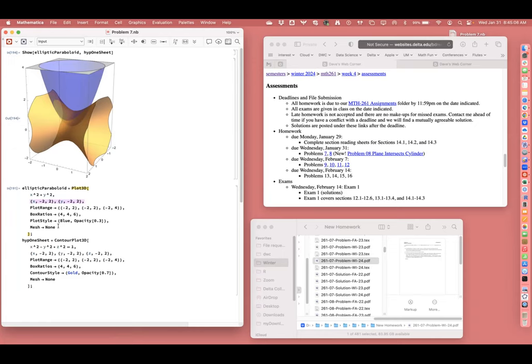I made it blue, slightly opaque with no mesh. The command looks complicated, but one piece at a time you understand what it's doing. For the hyperboloid of one sheet I use ContourPlot3D, which I give a mathematical equation. That includes a double equal sign - x squared minus y squared plus z squared equals equals 1. I use the same plot range and box ratios. This is gold and less opaque.